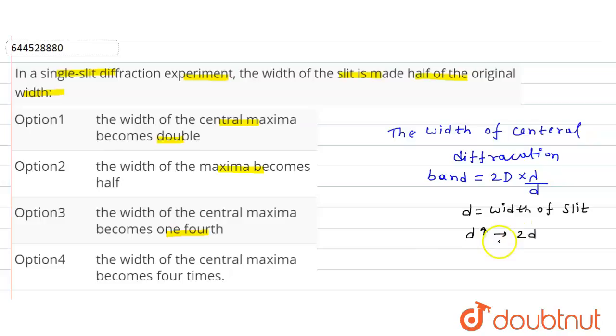But the light amplitude becomes double which increases the intensity four fold.